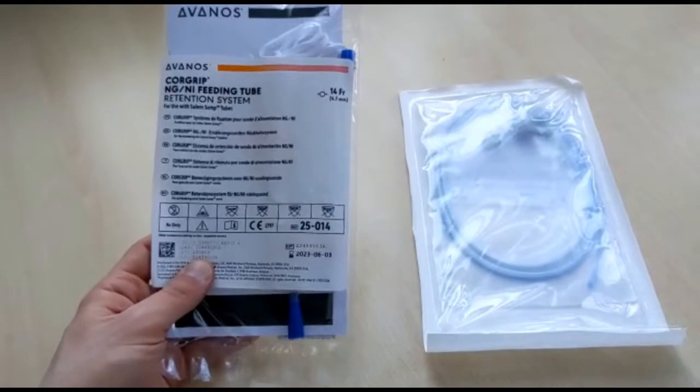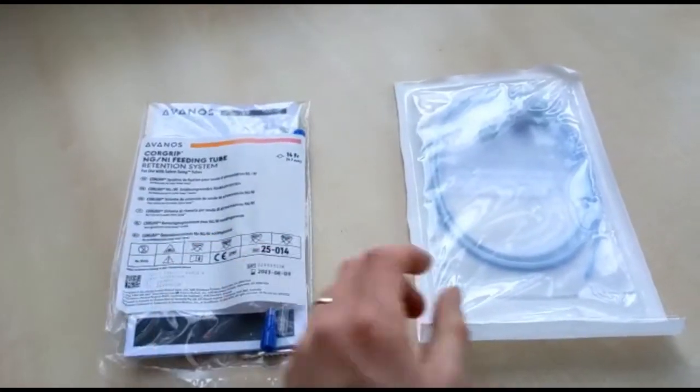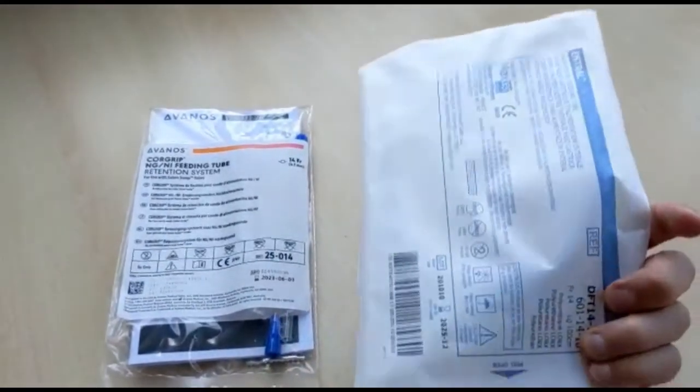The bridle kit should be used with a 14 French feeding tube. 14 French tubes are the standard size in critical care to allow easy suction and feeding without blockage.